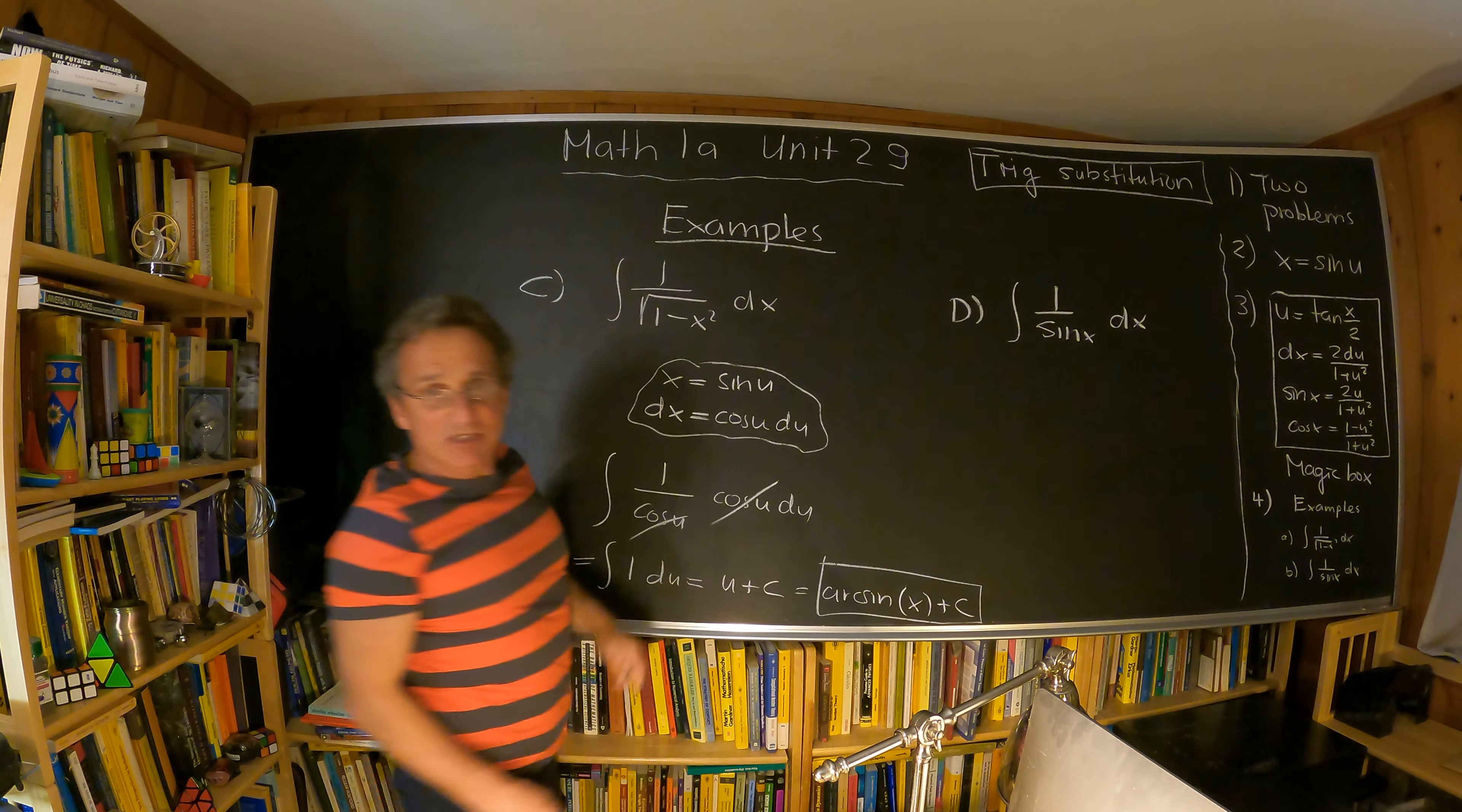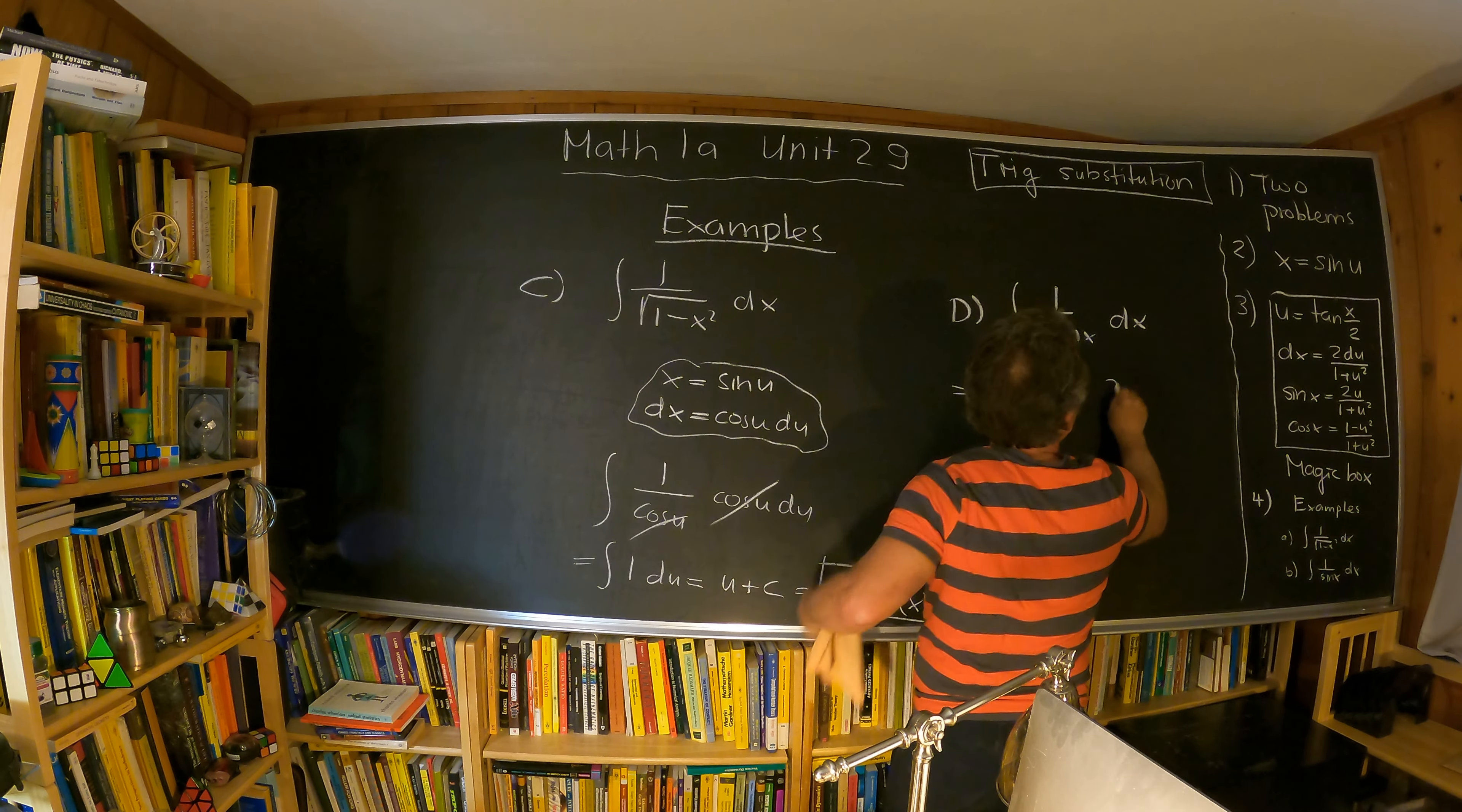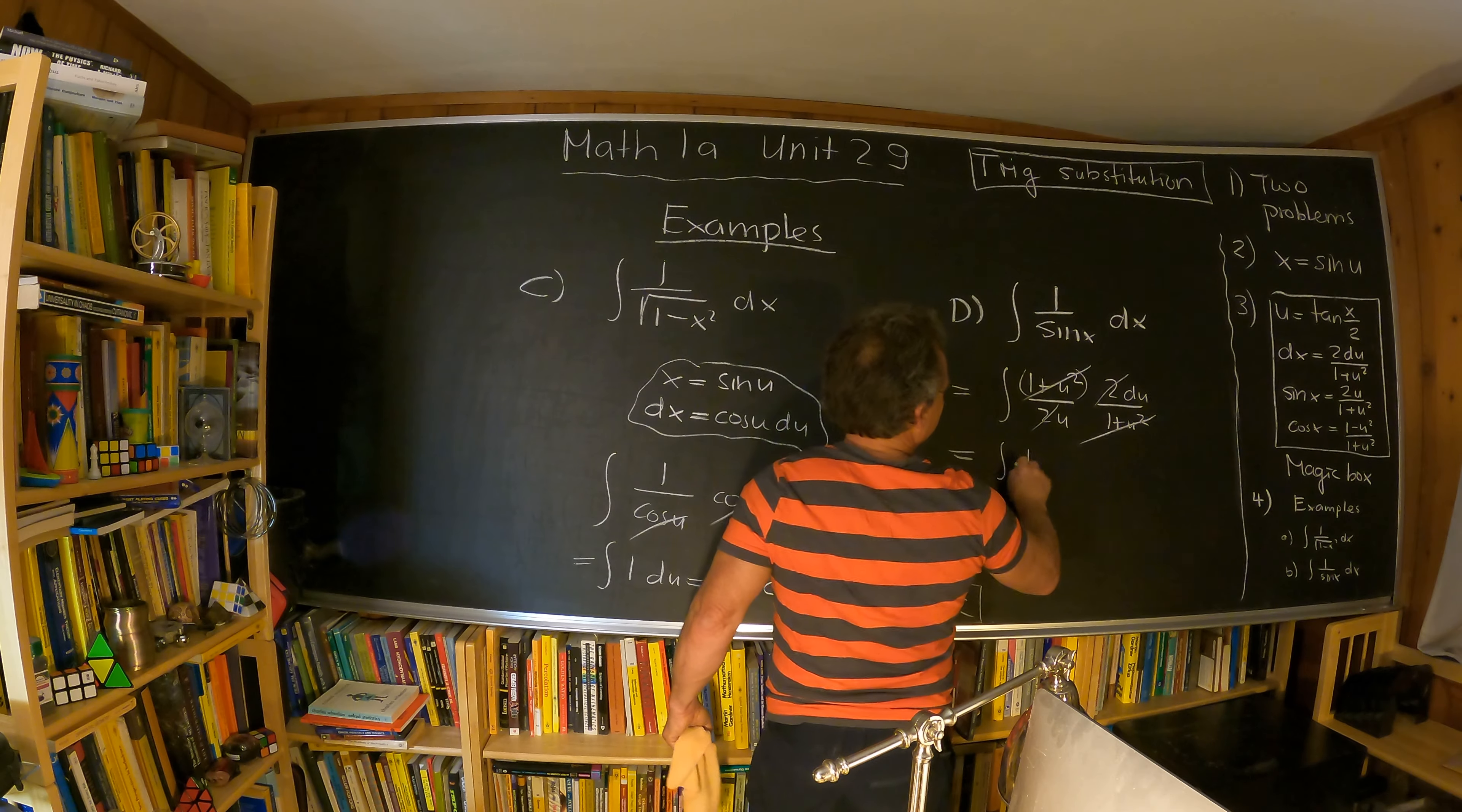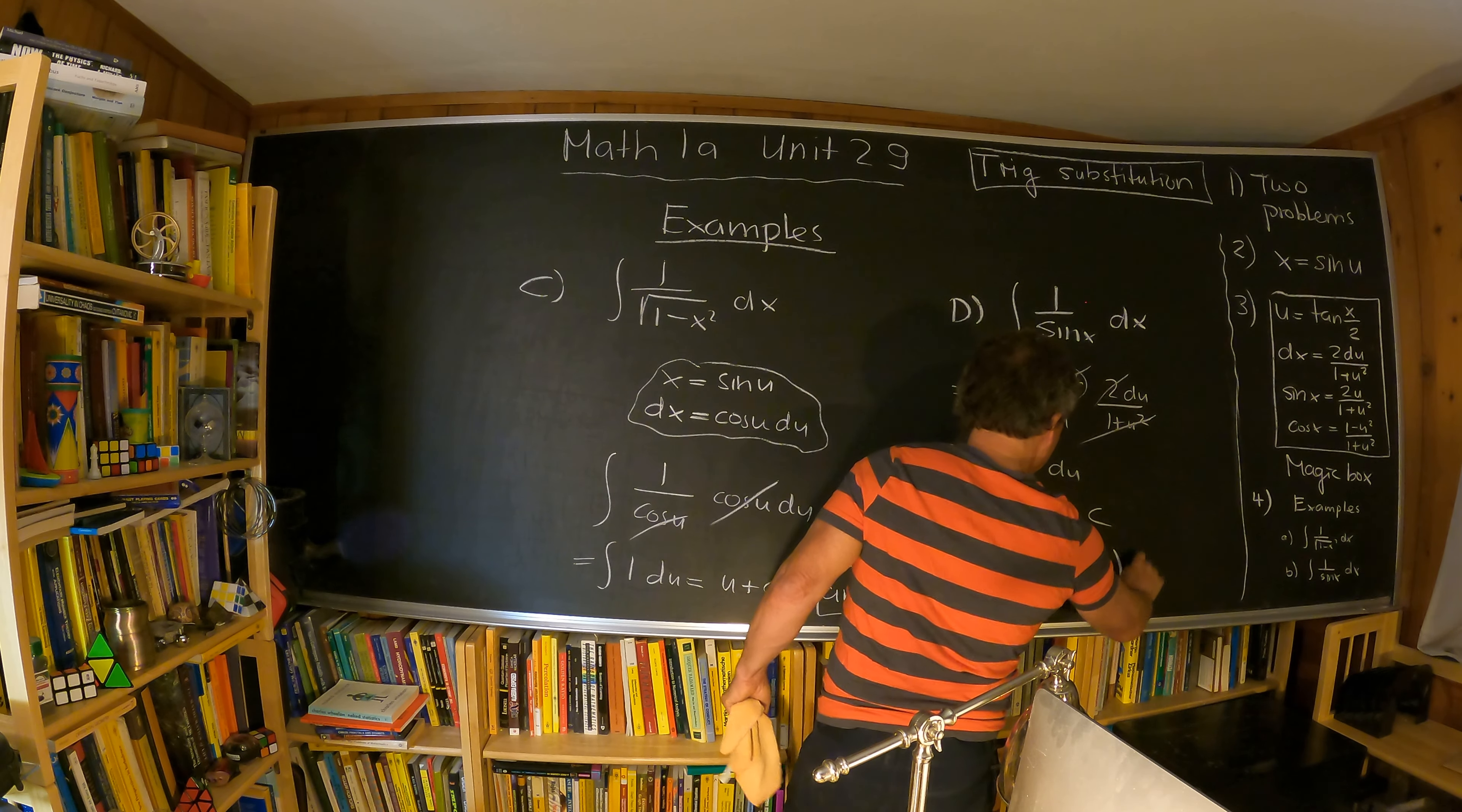Now in this case also we use just the magic box. And if we use the magic box, the 1 over sin x is the integral of 1 plus u square over 2u, and dx is 2 du over 1 plus u square. So the 1 plus u square cancels, and the 2 cancels, so that's the log. This is 1 over u du, so that's log of u plus c. And now we can plug in tangent x over 2 again. So this is the log of tangent x over 2 plus c.